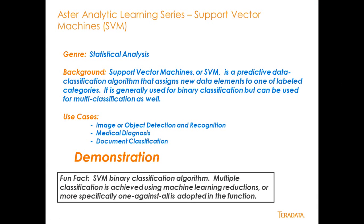Support vector machines is part of our statistical analysis genre of analytical functions available to you in Aster. Basically what support vector machines, or SVM, is a predictive data classification algorithm. Basically assigns new data elements to one of labeled categories. It's generally used for binary classification, but can be used for multi-classification.